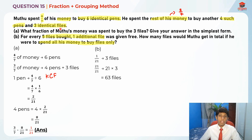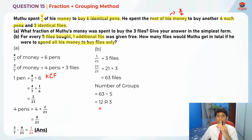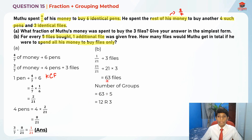But for every five files bought, one additional file is given free — this is where the grouping method comes in. We take 63 divided by 5, which gives us 12 remainder 3. So there are 12 complete groups of five, and for each group, one free file is given, meaning 12 additional free files.